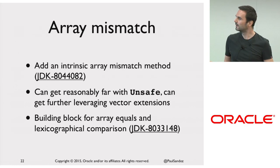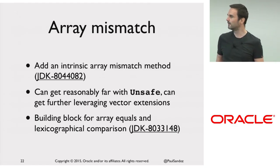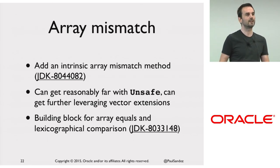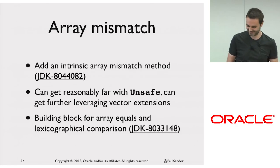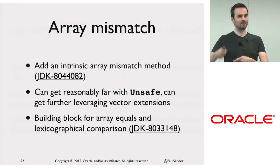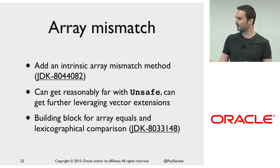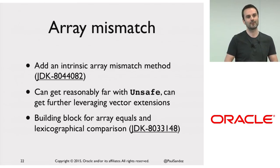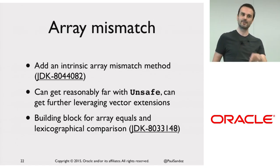So — array mismatch. What I'd like to do is add an intrinsic for an array mismatch method. We can get reasonably far developing that using unsafe, and we can get further leveraging vector extensions in the future. That is essentially the building block we can use to build up arrays.equals and lexicographical comparison. This array lexicographical comparison is a bit of a meme — you see it in Apache Cassandra and all these other places. They're all doing it the same way and they've all made the same mistake, because it all works on x86 fine, but it might crash or get really slow on SPARC because SPARC is an aligned architecture.